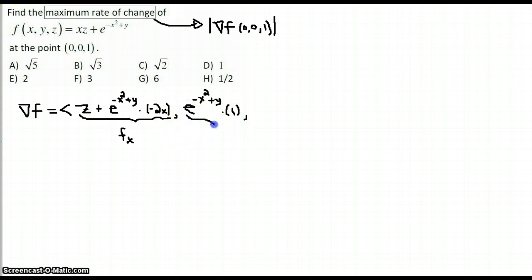And so we need our last component to be the z partial. So it starts off with an x, and then that's it because the second term doesn't have any z's in it.